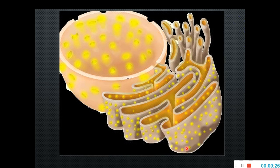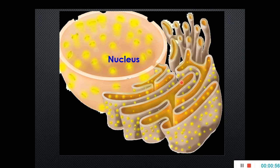Let's start from the endoplasmic reticulum. If you see the nucleus here, the outer membrane of the nucleus is continuous with sac-like structures that are spread out in the whole cytoplasm — these are called the endoplasmic reticulum. There are two types: those studded with granule-like ribosomes are termed rough endoplasmic reticulum, and those without ribosomes are termed smooth endoplasmic reticulum.